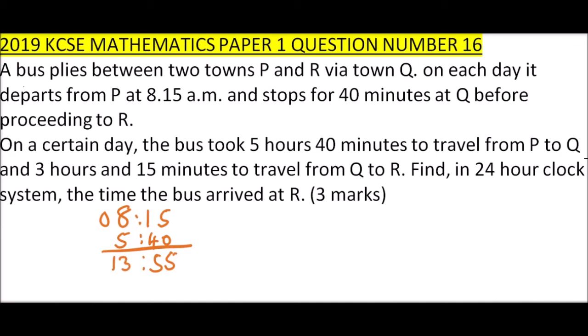Then it stopped for 40 minutes at town Q. So it means you add 40 minutes to the time it arrived at town Q. So this is 40 minutes.